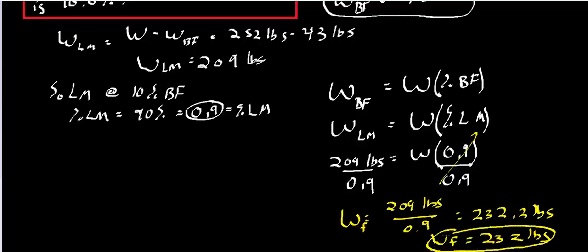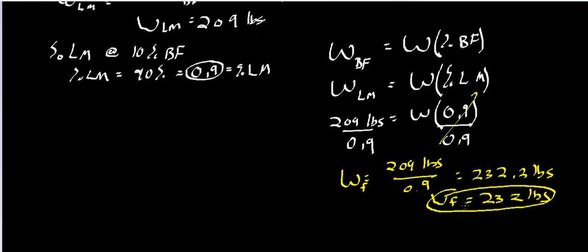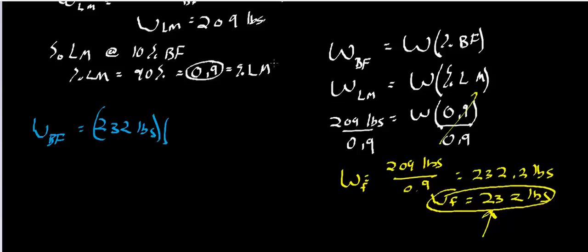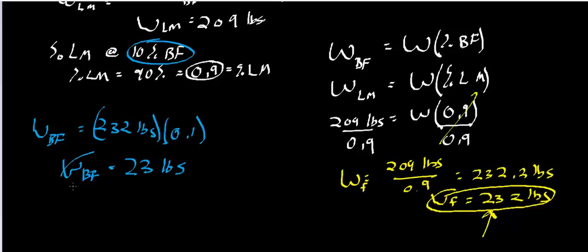Now that I know the final mass, I want to figure out the weight of body fat in the final condition once weight loss has occurred. The weight of body fat equals the total weight times the percent body fat — 232 pounds times 10%, or 0.1 — which gives us 23.2 pounds. I'll round that to 23 pounds of body fat.